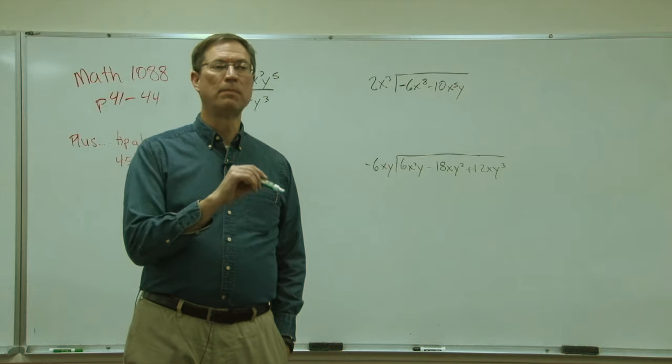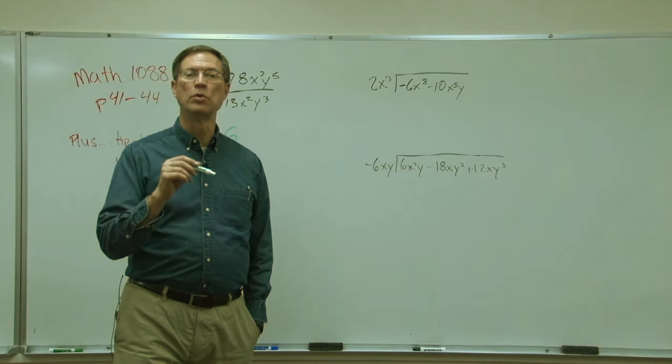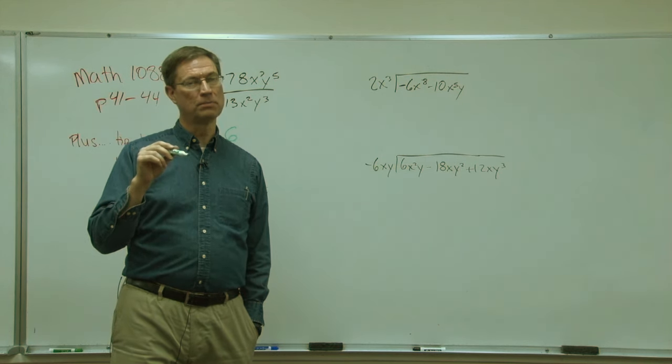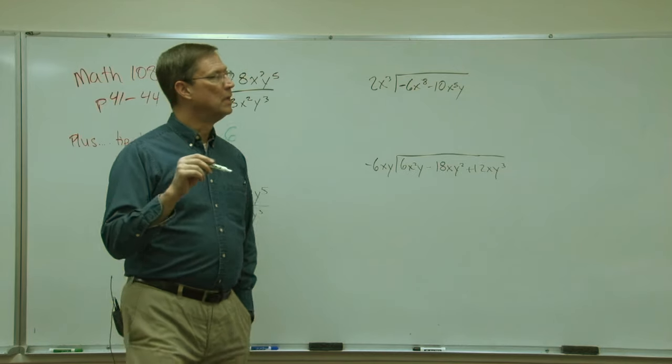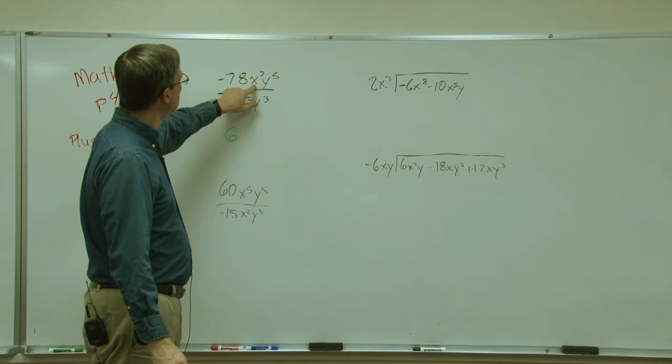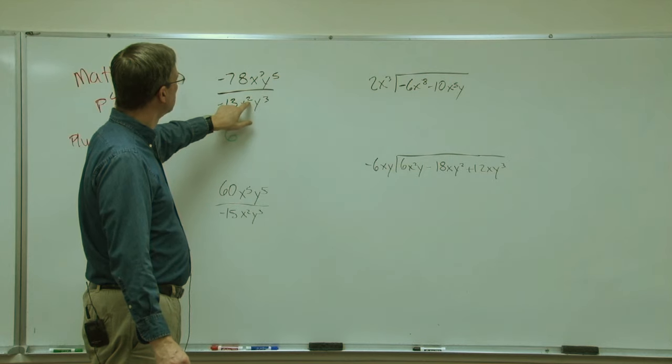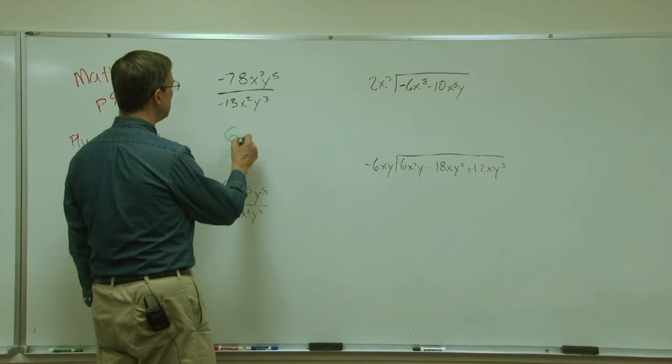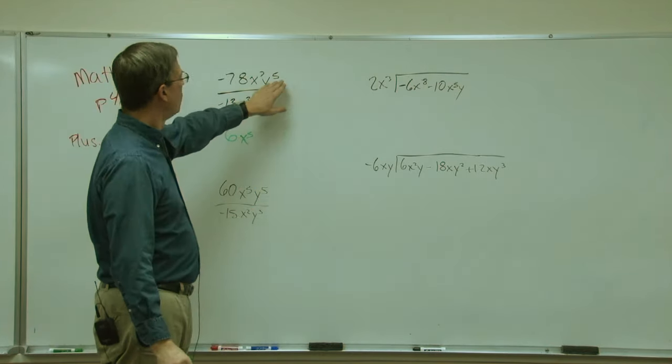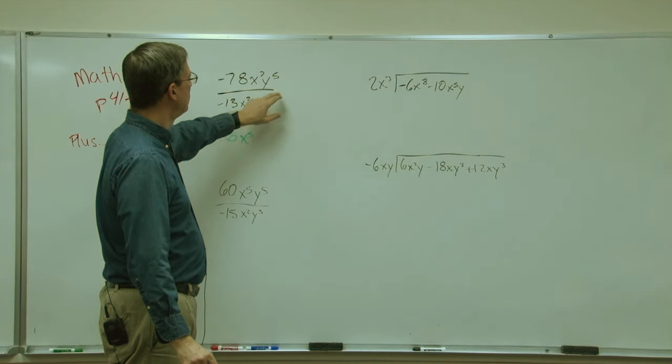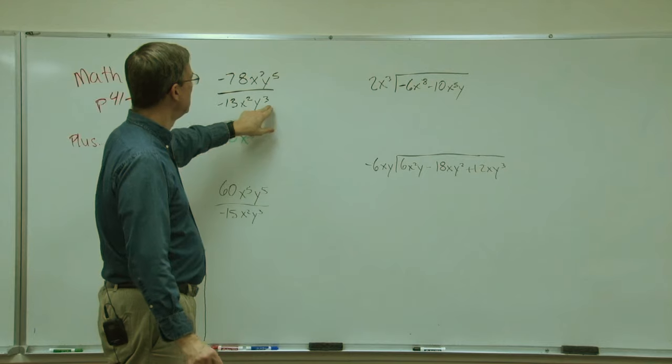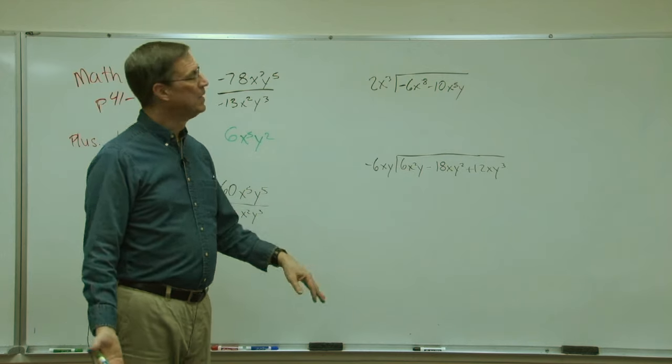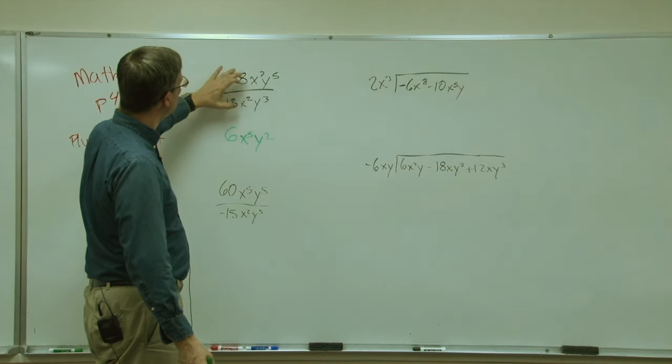As you read through the page describing how to do this, it tells you that you are going to subtract. When we're dividing, we subtract the exponents. So up here on the top, x to the seven, subtract x squared. Seven minus two would be five, so the answer is going to be x to the fifth. Y to the fifth divided by y to the third, we'll subtract five minus three and we get y to the second power.